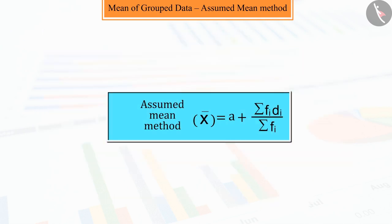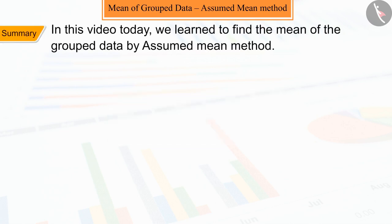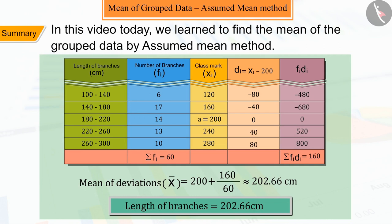So, hopefully, you must have understood this method of finding the mean. This method is called the assumed mean method. In this video, we learned to find the mean of grouped data by the assumed mean method. In the next video, we will see interesting examples based on it.